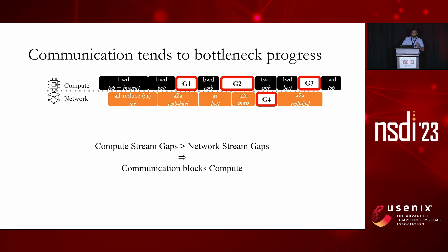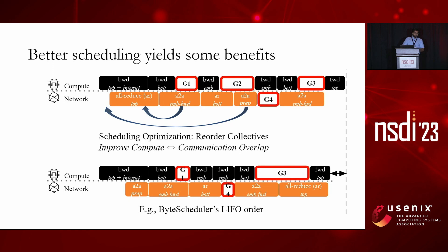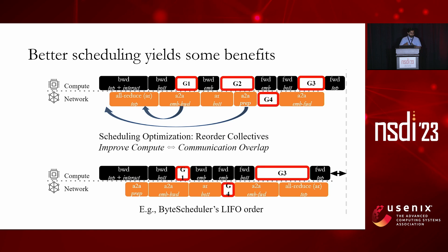Looking at existing optimizations: scheduling optimizations proposed by papers such as ByteScheduler go from the FIFO heuristic used by ML frameworks to a LIFO ordering. Keeping in mind the dependencies across the orange network operations, and respecting those dependencies, reordering them in time maximizes compute-communication overlap, giving us the improved picture at the bottom. There is an improvement in single iteration time for DLRM.